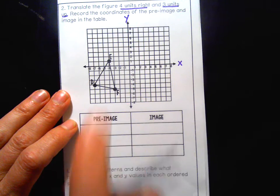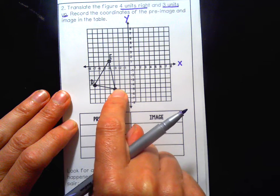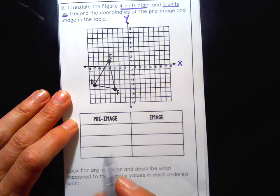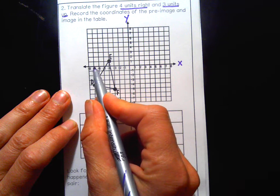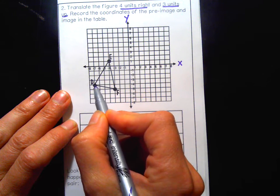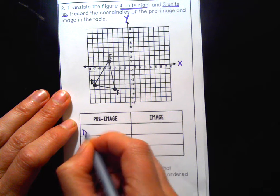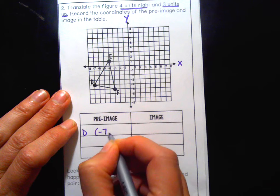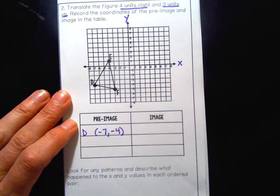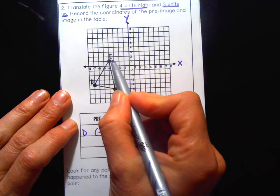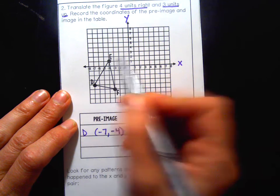In my pre-image, I have triangle DEF and I'm going to put the points for each one. D is at negative seven, negative four. E, I'm just going in alphabetical order. I go to my x, that's negative four, positive one.